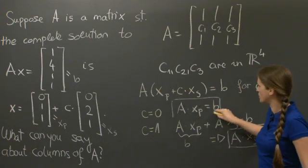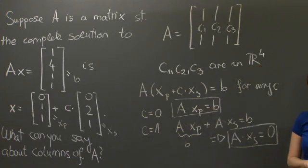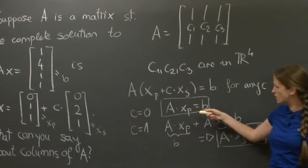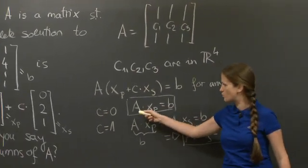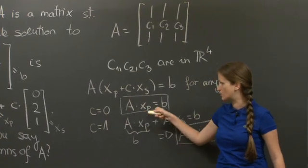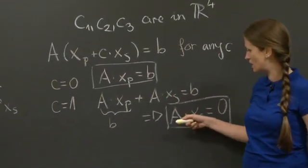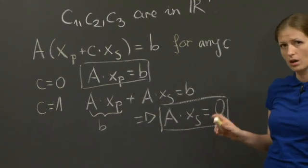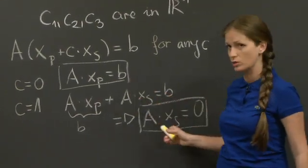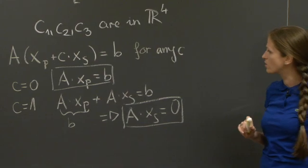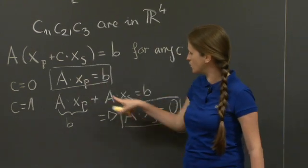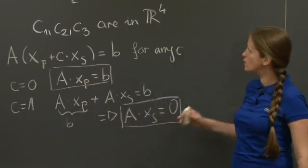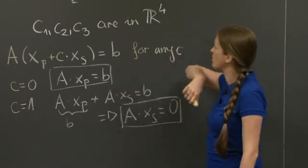So in trying to find what are the columns C1, C2, and C3 of the matrix A, let's look at these two equations. xp satisfies A times xp equals B, and xs satisfies A times xs equals 0. Again, if you know what particular and special solutions are, this shouldn't surprise you. But we also know what xp and xs are, so let's use them to try to calculate C1, C2, and C3.